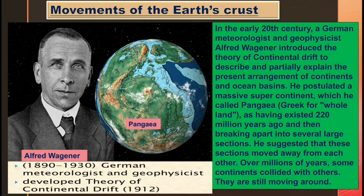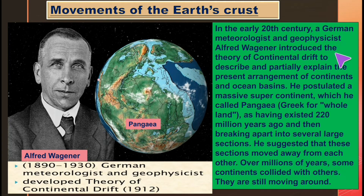In the early 20th century, German meteorologist and geophysicist Alfred Wegener introduced the theory of continental drift to describe and partially explain the present arrangement of continents and ocean basins.